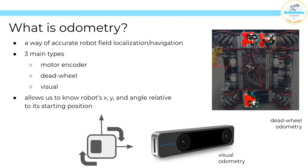Odometry allows us to know the robot's x, y, and angle relative to its starting position. On the bottom you can see a diagram which illustrates that the robot can track its angle, x, and y positions. To the right of that, you can see a camera that is often used for visual odometry. And on the very right, you can see an example of dead wheel odometry.